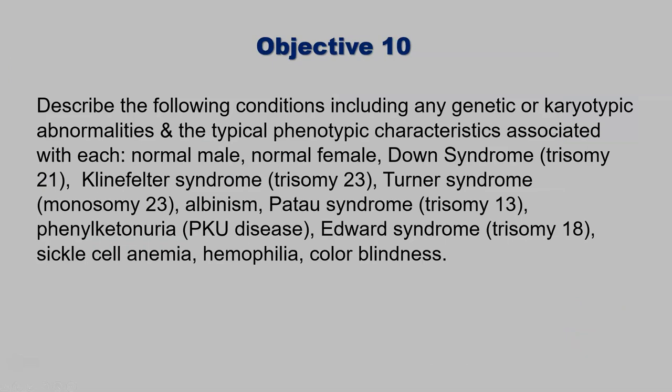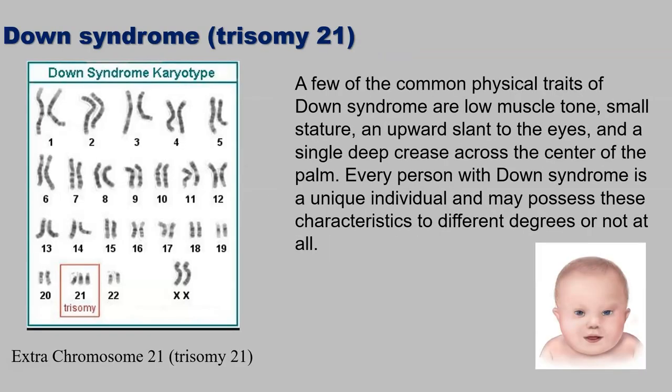The last part of this lecture is to describe some conditions and look at the karyotypes. The first is Down syndrome. Down syndrome is a case of trisomy 21 — three chromosomes occurring at the 21st spot. A few of the common traits of Down syndrome are low muscle tone, small stature, an upward slant of the eyes, and a single deep crease across the center of the palm. Every person with Down syndrome is a unique individual and may possess these characteristics to different degrees or not at all. But Down syndrome is an occurrence of three chromosomes instead of the normal two at spot 21.